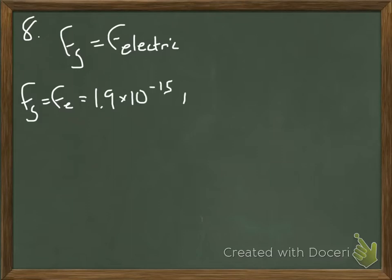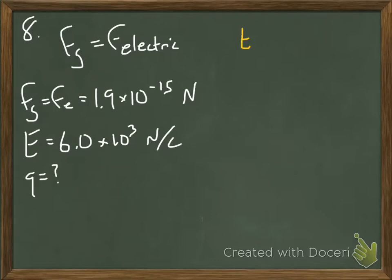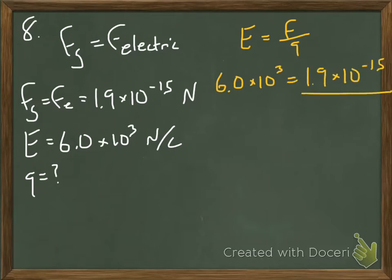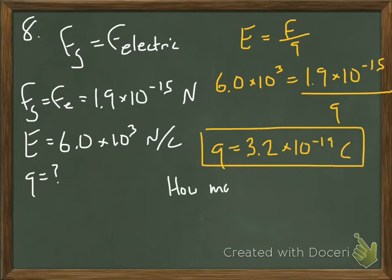Here again, we're given the force of gravity. Anytime we see the word weight, we know that's a force of gravity, which in this case we need to equal the force of electricity if we want something to float in midair. So given force, the electric field, and Q, we can just use our equation there to find the Q.